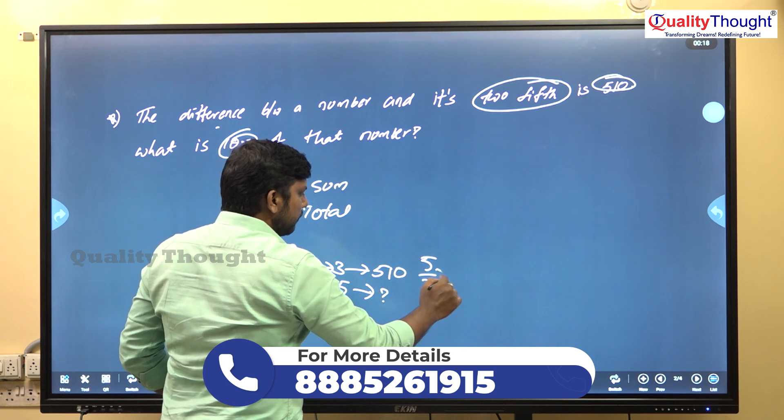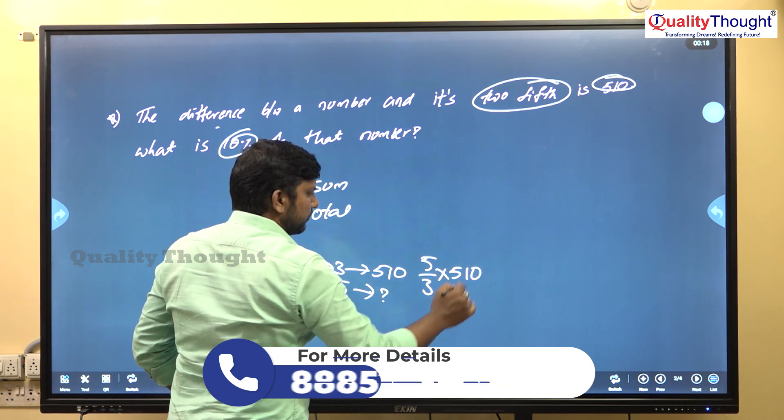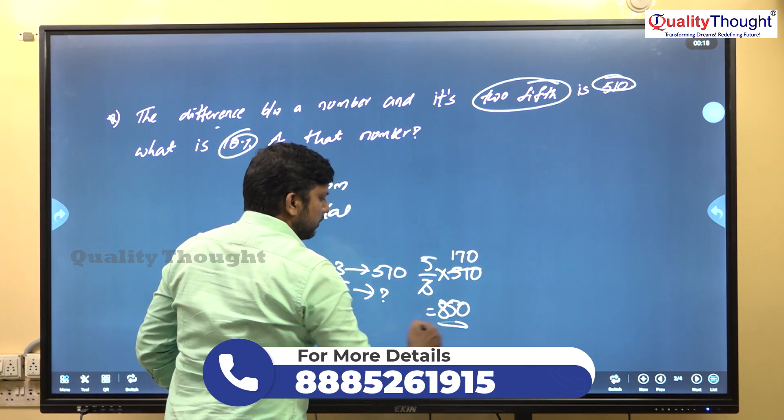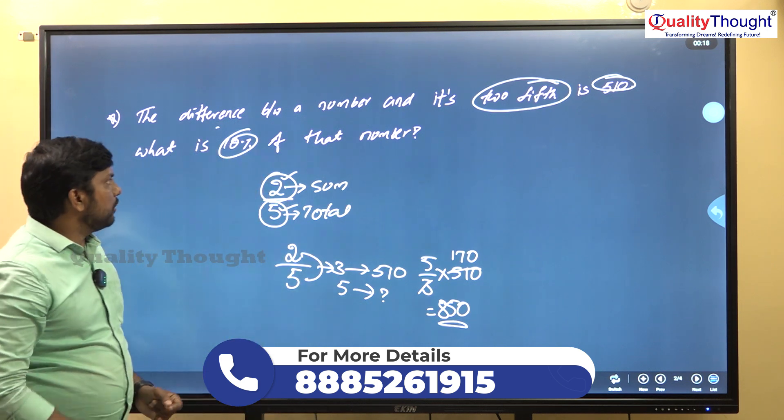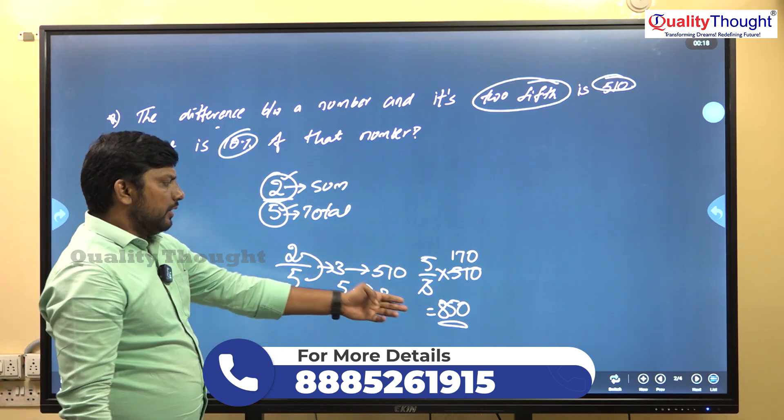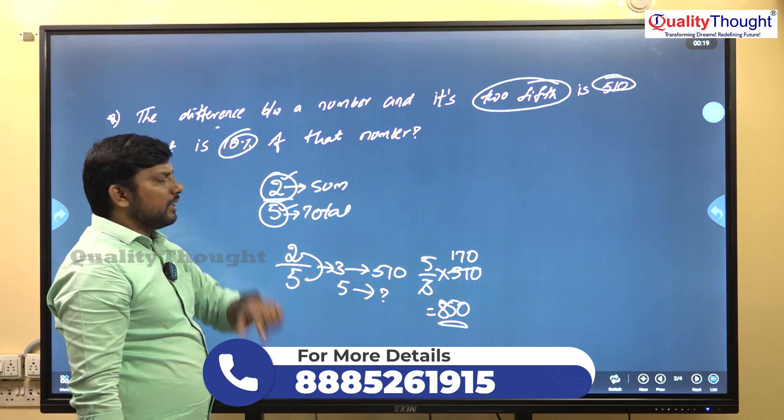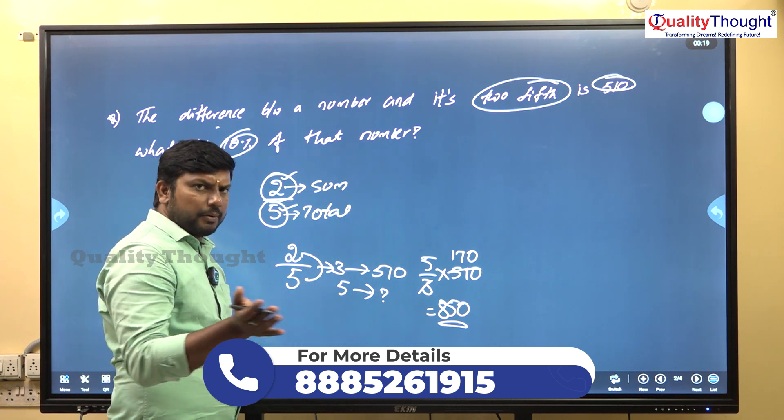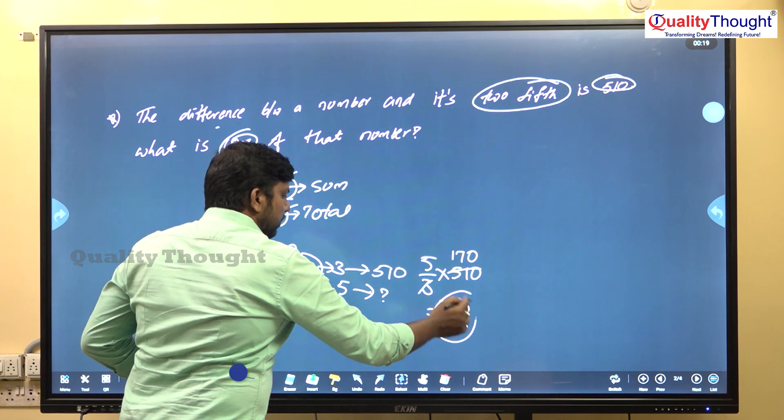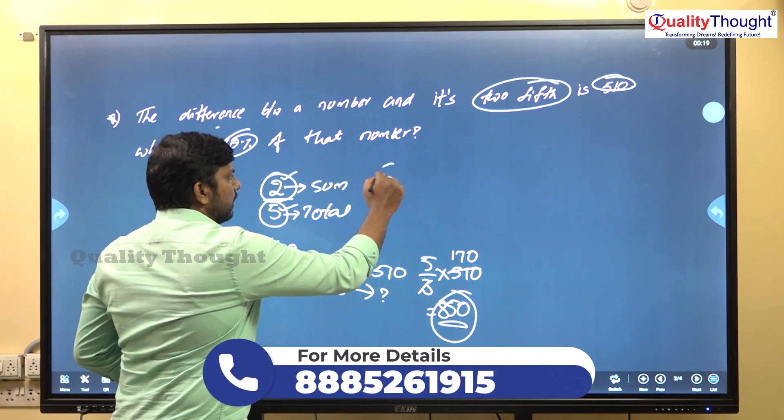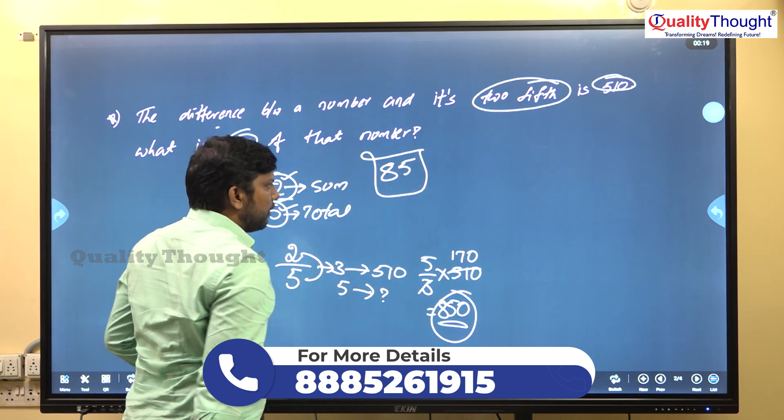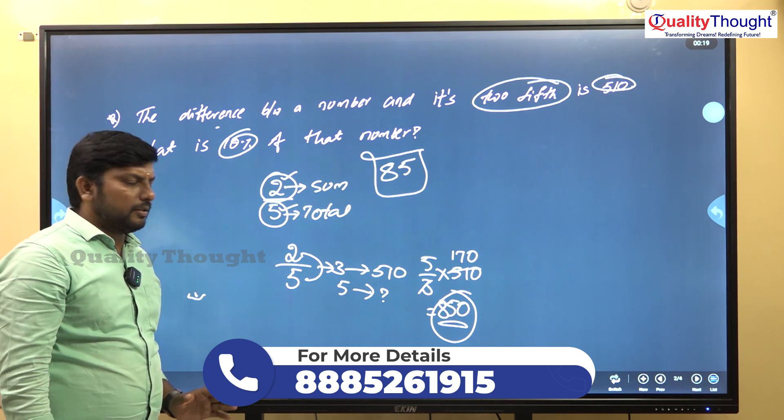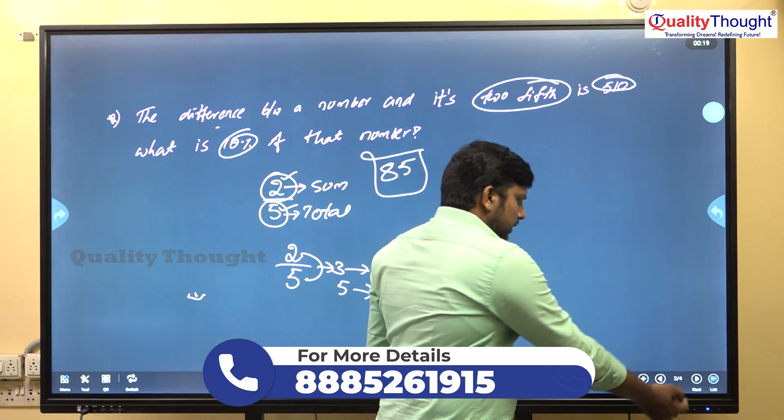3 parts equal 510, and 5 parts equal what? 5 by 3 into 510. 3 ones, 3 seventeens. So the number is 850 rupees. Then find 10 percent of 850.